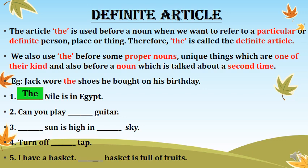'Can you play dash guitar?' Guitar is an instrument. We are not talking about all instruments — we are talking about one particular instrument, that is guitar. So we use 'the': 'Can you play the guitar?' Next: 'Dash sun is high in dash sky.' The sun is one, so we use 'the': 'The sun is high in the sky.'